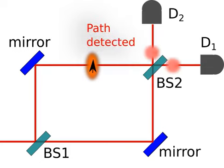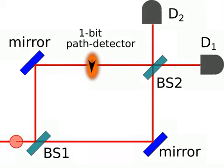However, this results in a loss of interference. The particles are equally likely to register at D1 and D2.